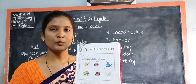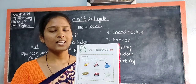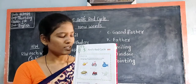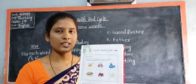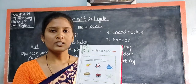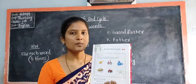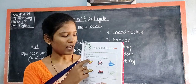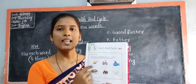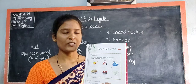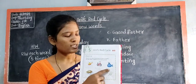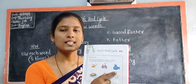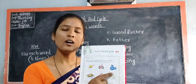Look at the third picture children. What can you see in the third picture? The third picture is of a submarine. So tell me children, through which way does a submarine move from one place to another — sky, water, or land? Water. So write water in the blank: W-A-T-E-R. Water.